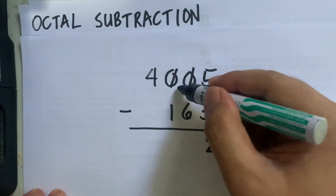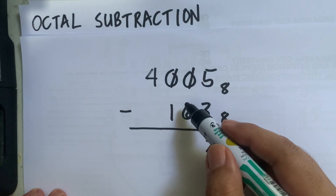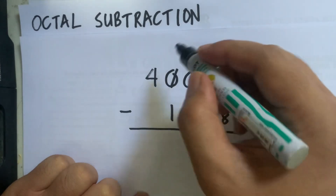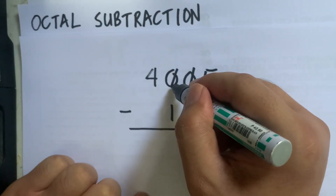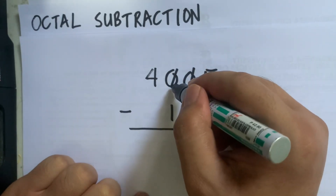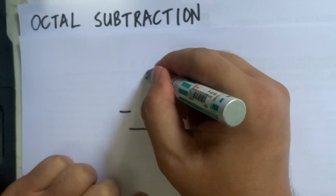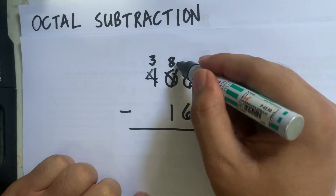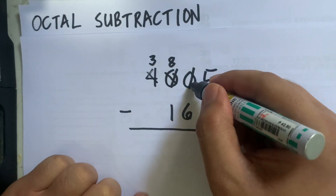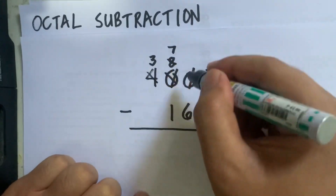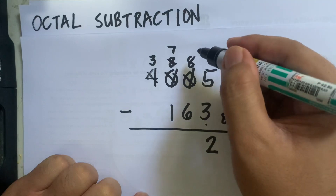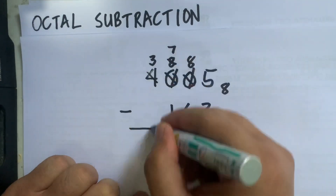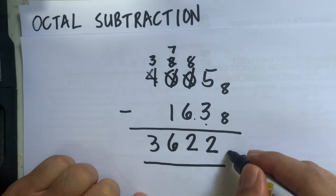We have trailing zeros here, just like in binary subtraction. Before 0 can borrow from another 0, that 0 must first borrow from 4. So 0 borrows 1 from 4 — 4 becomes 3, and 0 becomes 8. Then this 0 borrows 1 from 8 — 8 becomes 7, and 0 becomes 8. So 8 minus 6 is 2, 7 minus 1 is 6, bring down 3 — the answer is 3622.